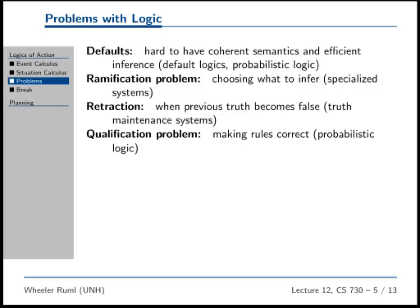There's also the retraction problem, which we discussed in the context of non-monotonic logic. If I tell you Tweety is a bird, you infer Tweety is cute, fluffy, and flies. Then I tell you Tweety is a penguin, and now Tweety doesn't fly — I retract that deduction. It's similar to the question of defaults: how do you handle a default when you learn something new that makes something previously true now false? There are special systems for dealing with this.